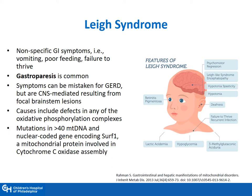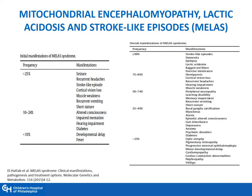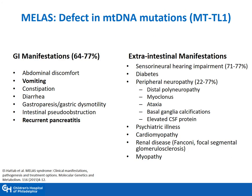Gastroparesis is extremely common in patients with Leigh syndrome, so we must consider different mitochondrial disorders when patients present with such nonspecific GI symptoms in childhood. MELAS — mitochondrial encephalomyopathy, lactic acidosis, and stroke-like episodes — is another disorder that presents with GI manifestations. It is secondary to a defect in the MT-TL1 mutation, and approximately three-quarters of patients present with GI manifestations.